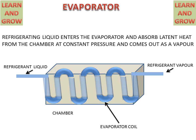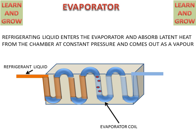This is the function of the evaporator. When refrigerant liquid enters the evaporator coil, it circulates and converts into vapors by taking latent heat, and exits as refrigerant vapor at constant pressure. This is the working of the evaporator and how it works.